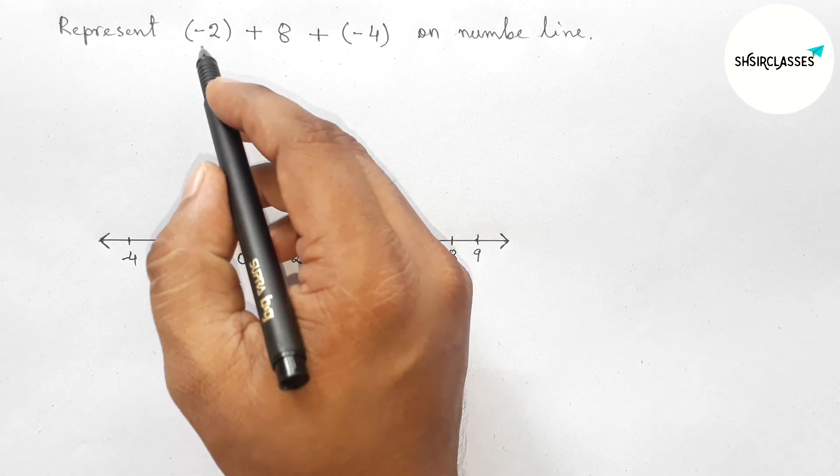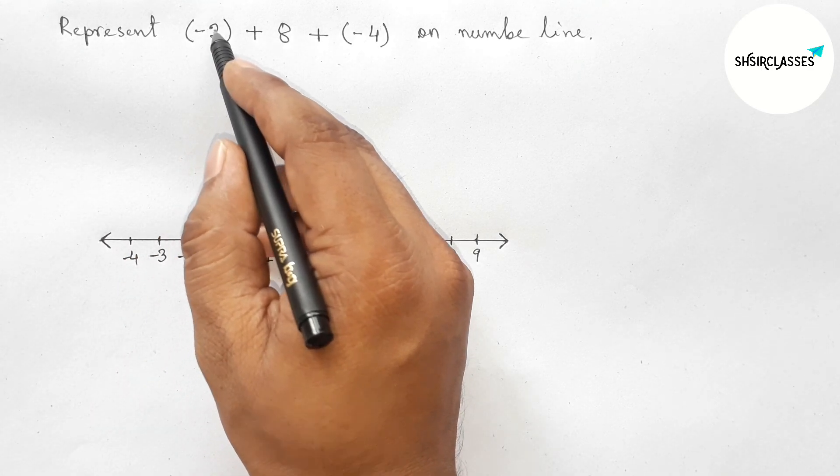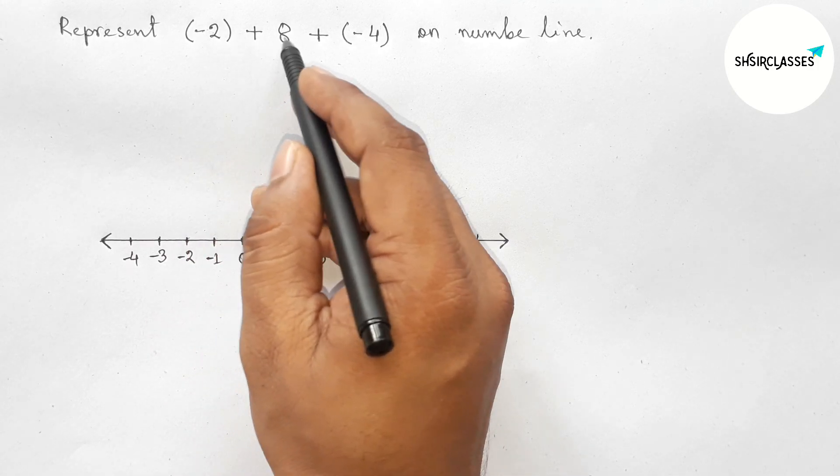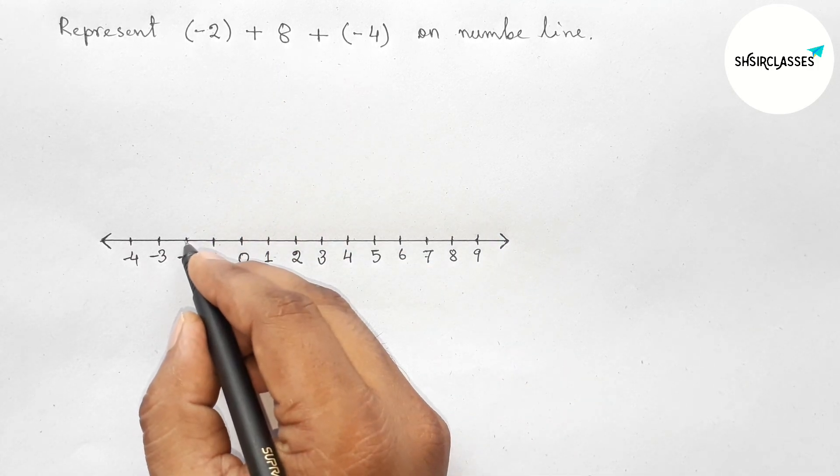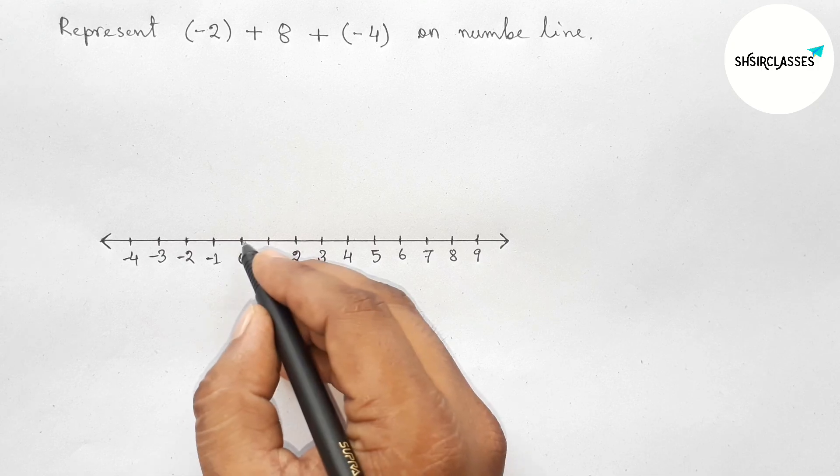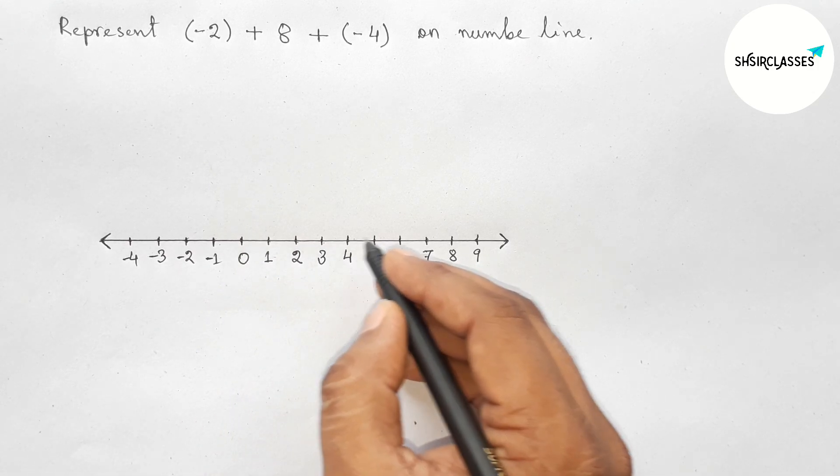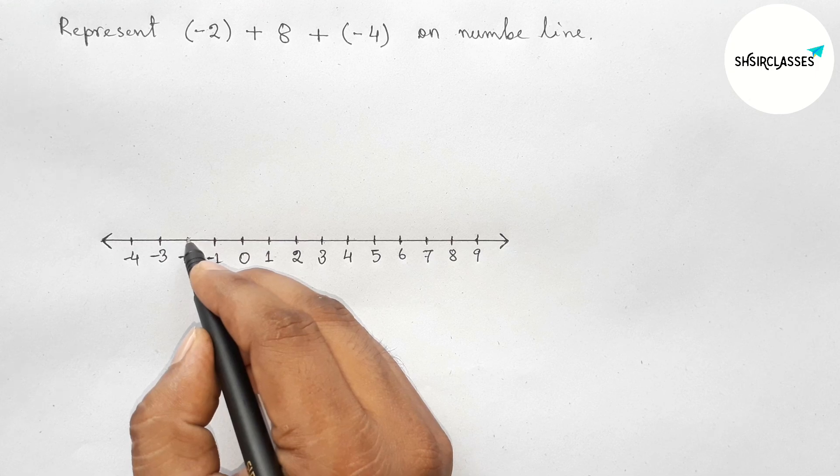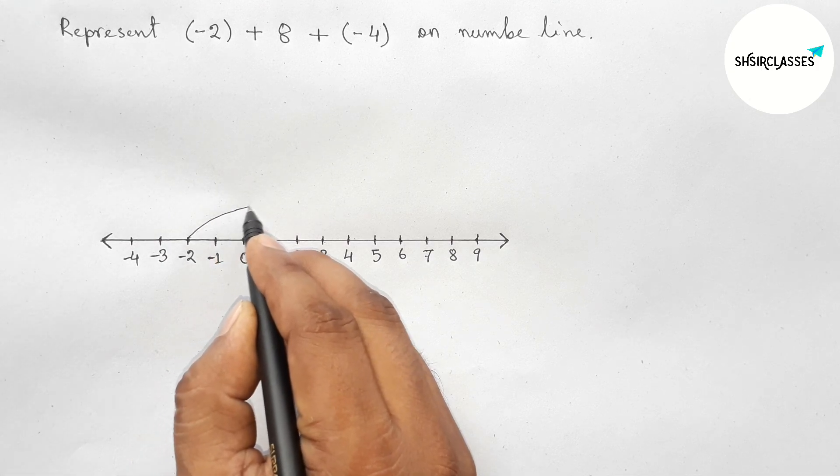And this side: -1, -2, -3, -4, and continuous. So this is a perfect number line. Now first, here is -2, so marking here -2. Then adding 8. So 1, 2, 3, 4, 5, 6, 7, 8. So here is 6.